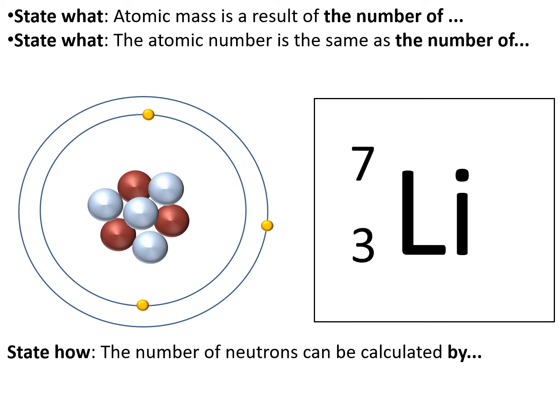So now I'd like you to complete these sentences. Atomic mass is a result of the number of... The atomic number is the same as the number of... And finally, the number of neutrons can be calculated by...